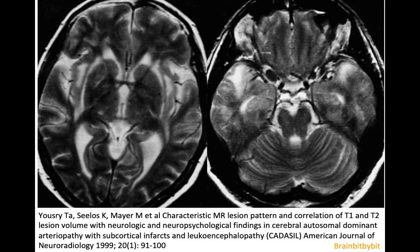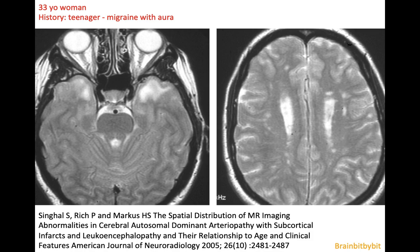On imaging in CADASIL, you can see hyperintensity in the external capsule in over 95% of patients, and involvement of the anterior temporal pole in over 90% of patients — and this anterior temporal pole involvement is very specific for CADASIL. This is an example of a woman in her 30s who has had migraines since she was a teenager, with anterior temporal pole involvement and white matter lesions greater than expected for her age. This picture is very suggestive of CADASIL and the diagnosis was confirmed with a skin biopsy.